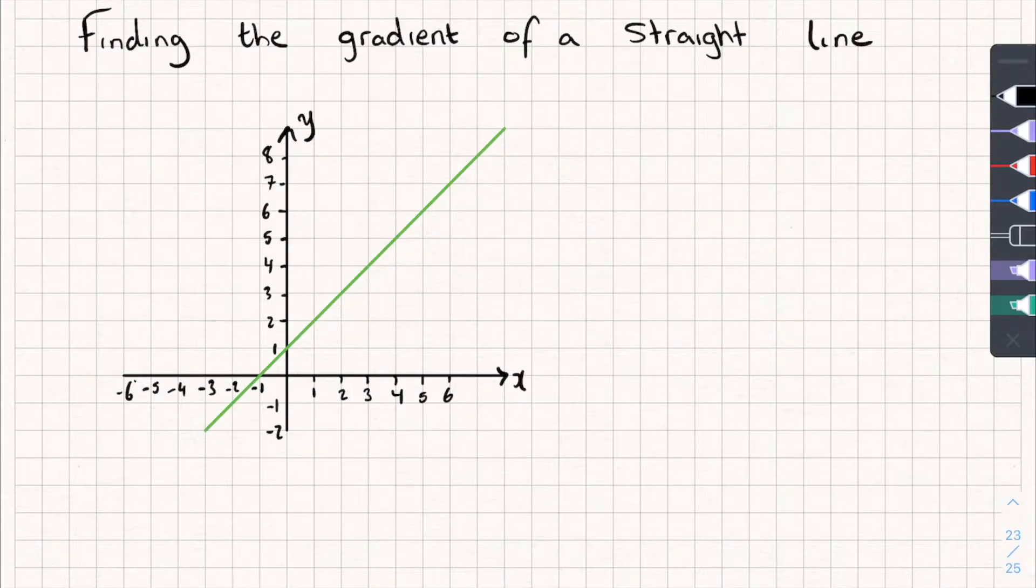Now the gradient tells us how steep our line is. So if we have a really positive gradient, like a bigger number that's positive, we're going to have a very steep increasing line, and that's if it's positive.